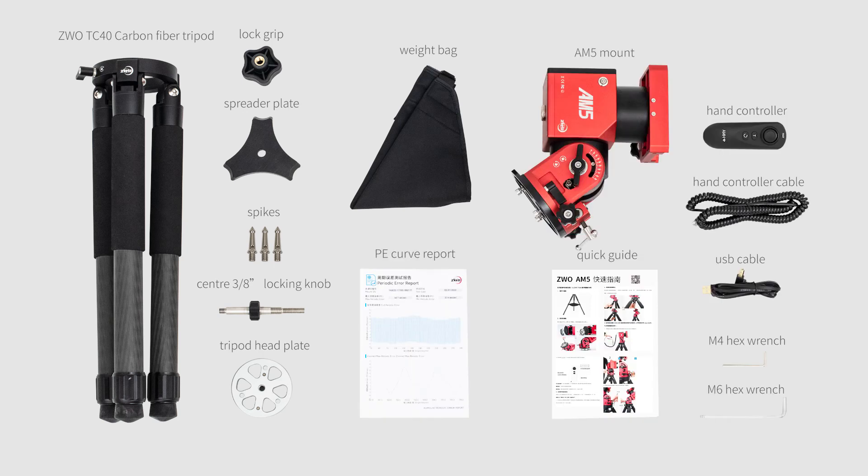The equatorial mount comes with a mount body, a user guide, the PE curve report, the hand controller, the hand controller cable, an F6 hex wrench, and an M4 hex wrench.